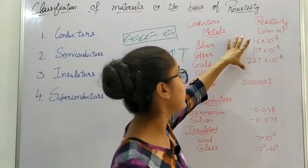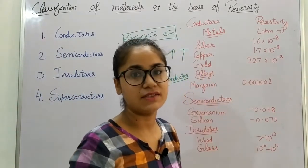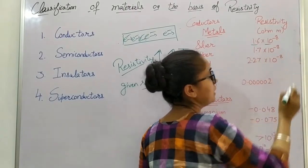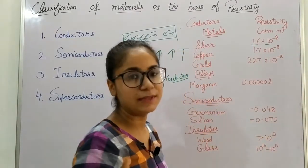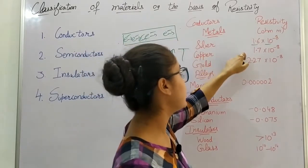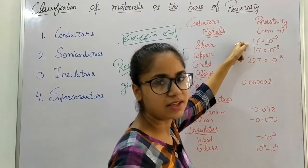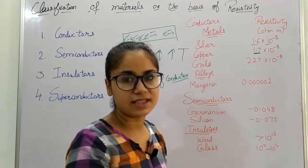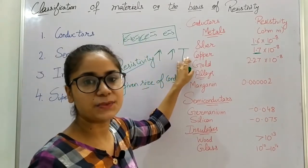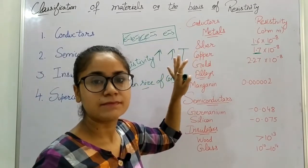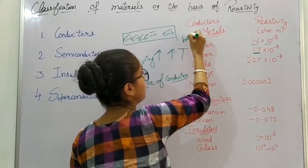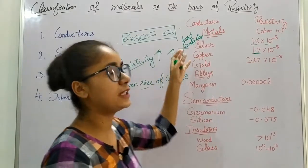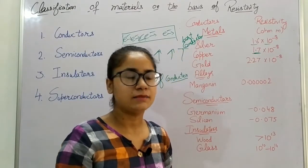Here on the board are some metals and manganin alloy with their resistivity value ranges. First, silver has a resistivity of 1.6 × 10⁻⁸ ohm·meter. Silver has the least resistivity — even copper is slightly greater than silver. Silver is the best conductor, but it is not used as much in wires because it is expensive.